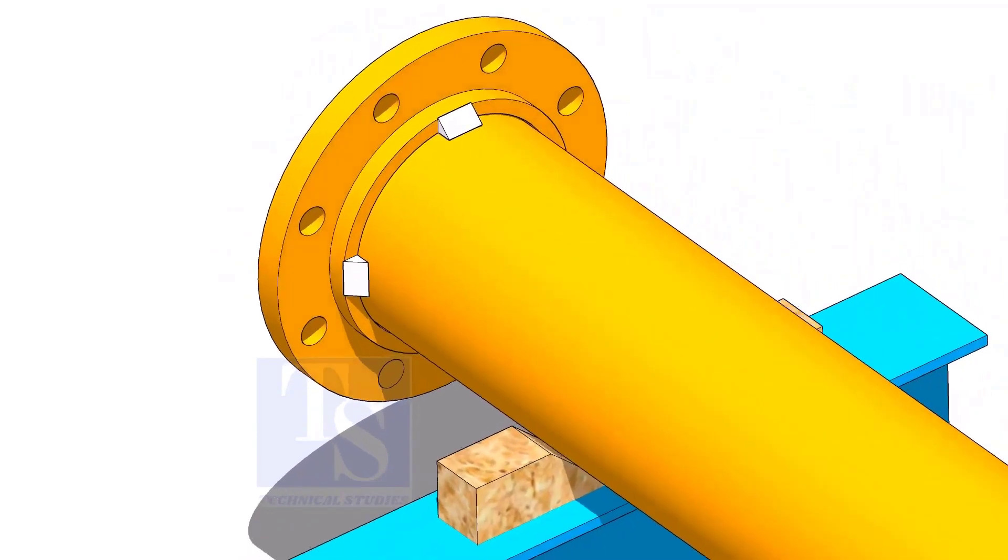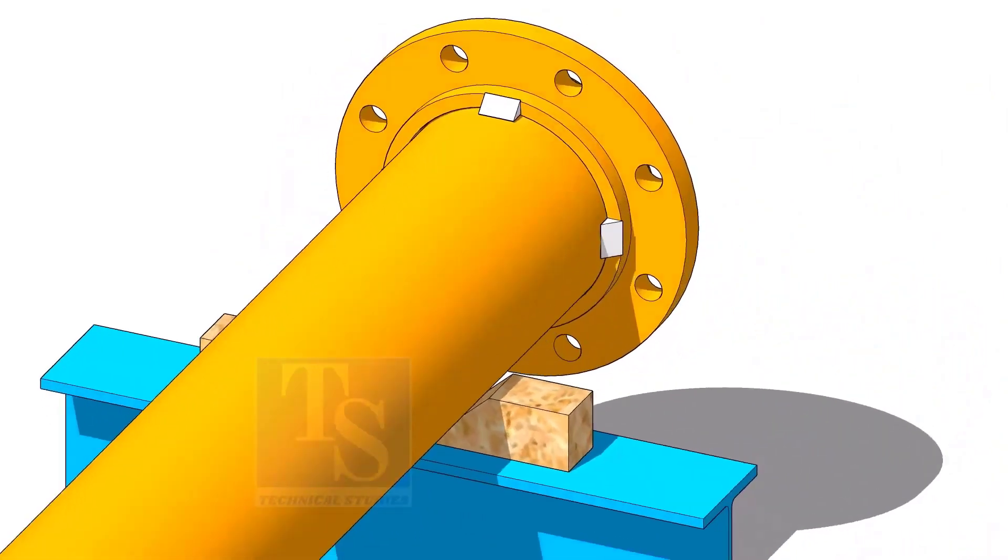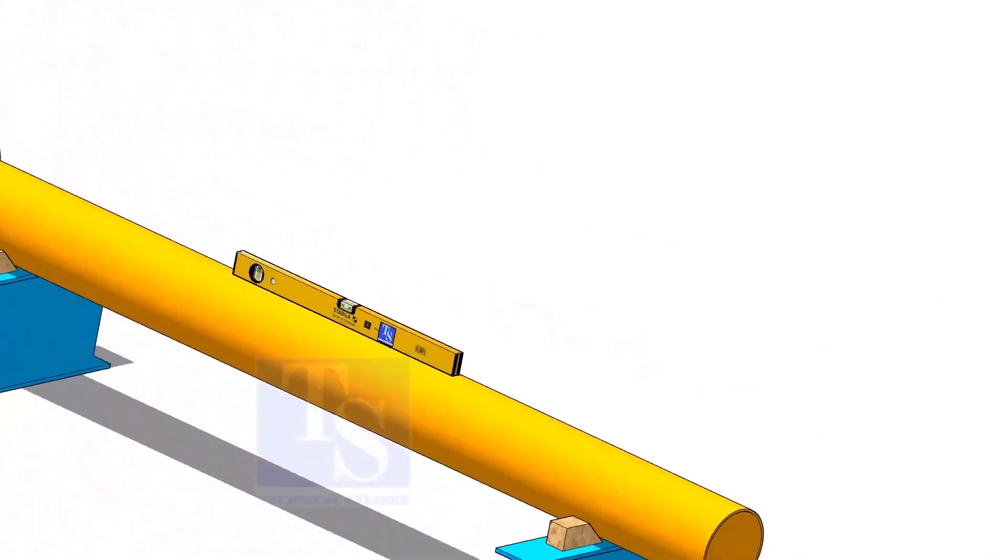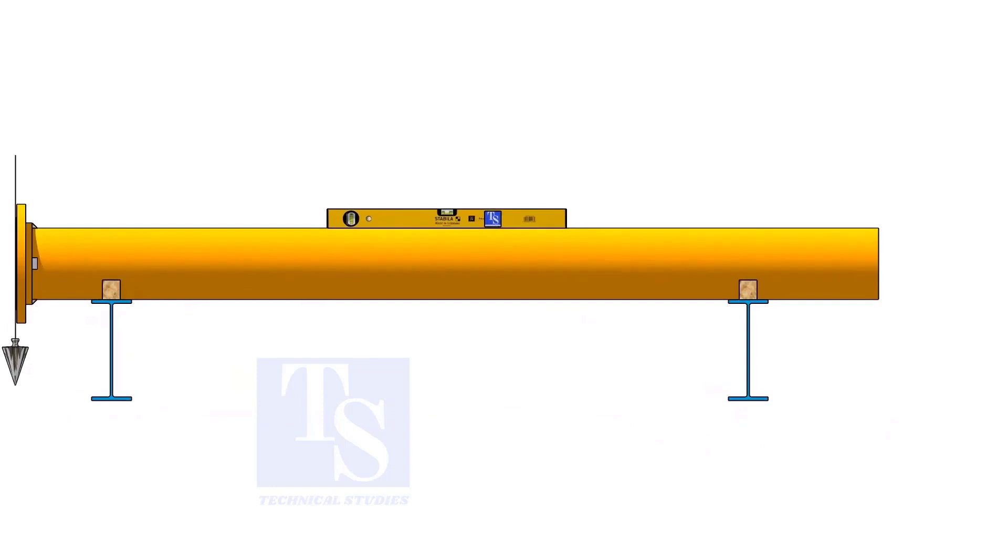Tack weld on both sides of the flange. Now, correct the level of the pipe.